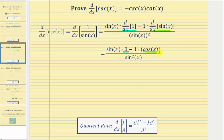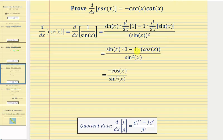Now we'll simplify the numerator: sine x times zero is zero, and then we have negative one times cosine x, which gives us a numerator of negative cosine x. So now we have the derivative is equal to negative cosine x divided by sine squared x.